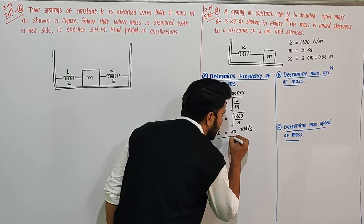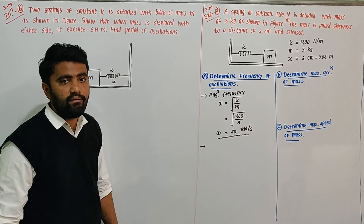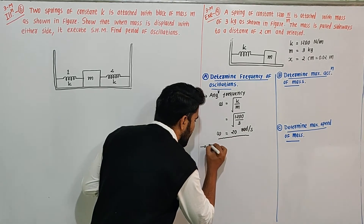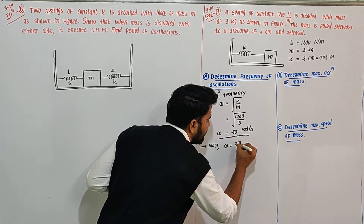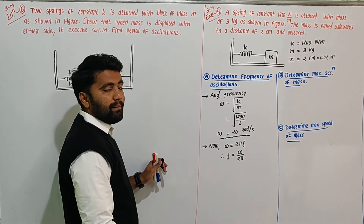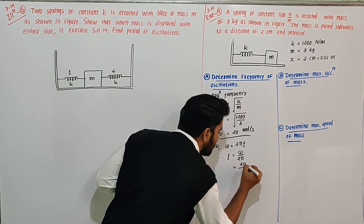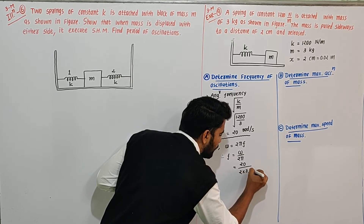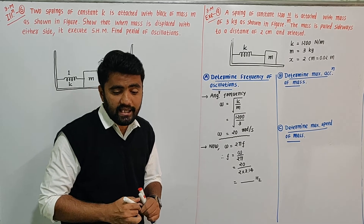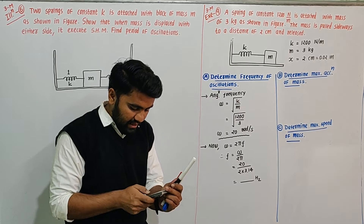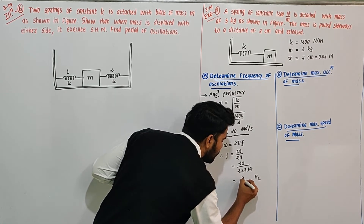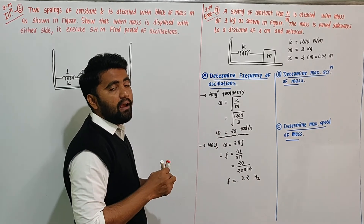But we need to find frequency F. Since ω = 2πF, we get F = ω / (2π). So F = 20 / (2 × 3.14). That gives 20 / 2 = 10, and 10 / 3.14 = 3.18. So we can say frequency F ≈ 3.2 Hz.